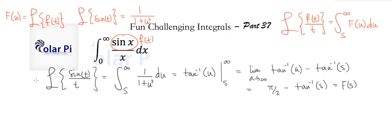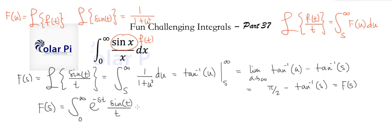We also know that capital F(s), which is the Laplace transform for sin(t) over t, by definition is equal to the integral from zero to infinity of e to the minus st times sin(t) over t dt. Now let's look at capital F(0) in this definition. Capital F(0) means make s equal to zero, so we get e to the zero, which is one. So we'd get the integral from zero to infinity of sin(t) over t dt, which is the integral we're trying to solve. So all we have left to do is figure out what capital F(0) is.